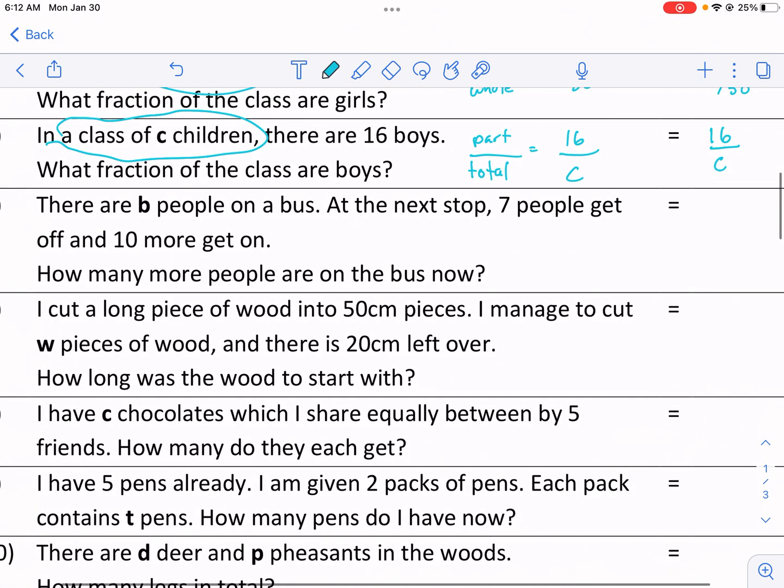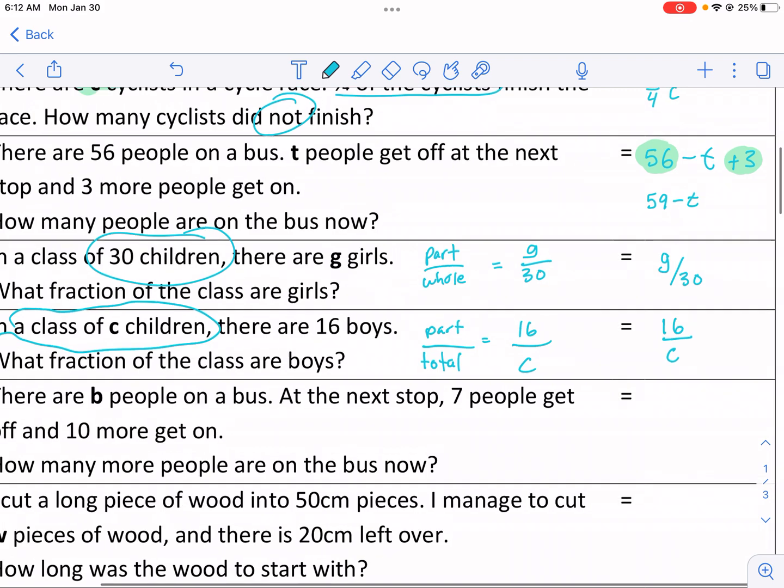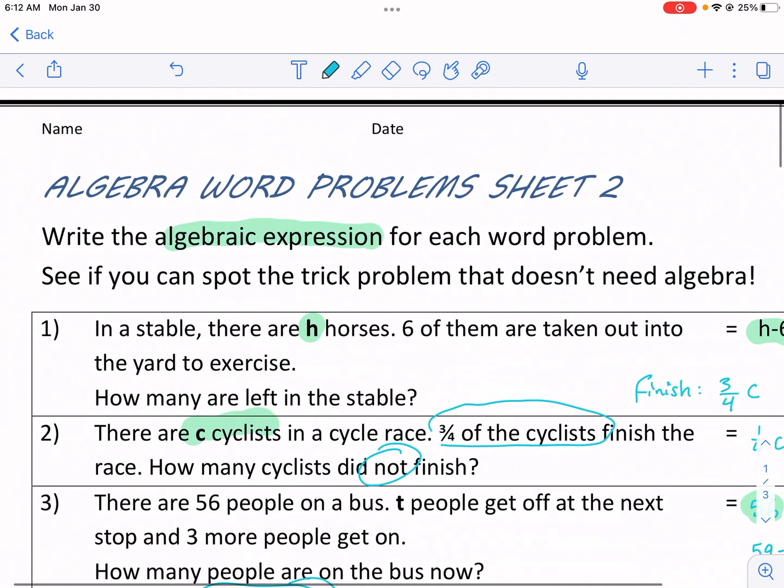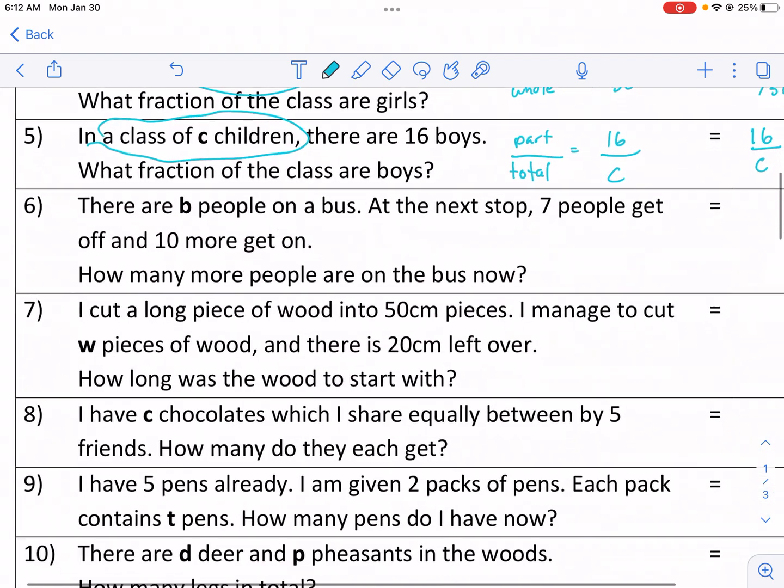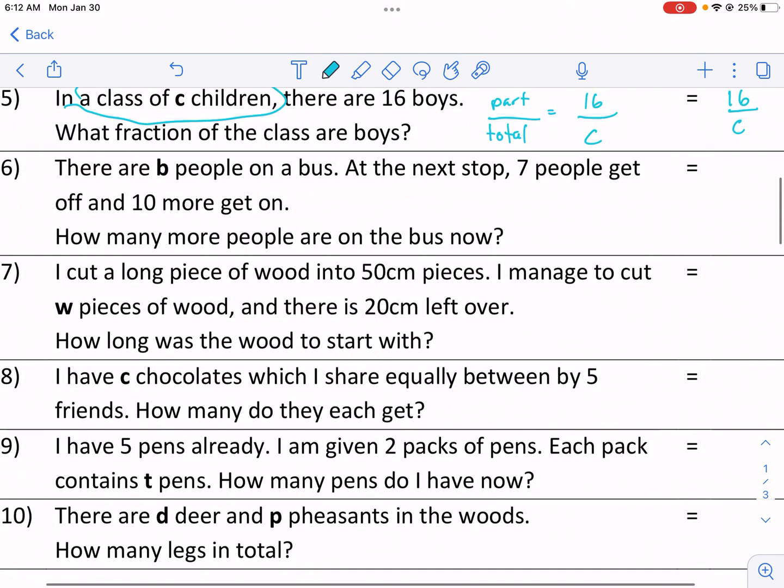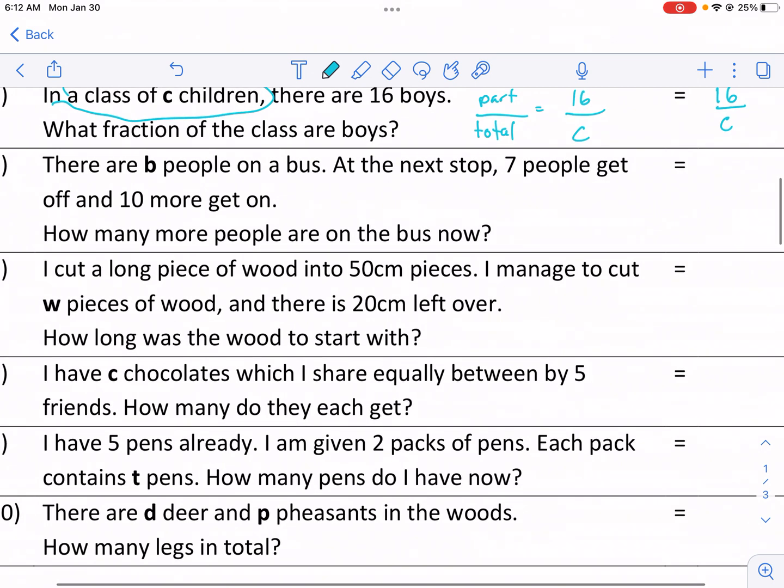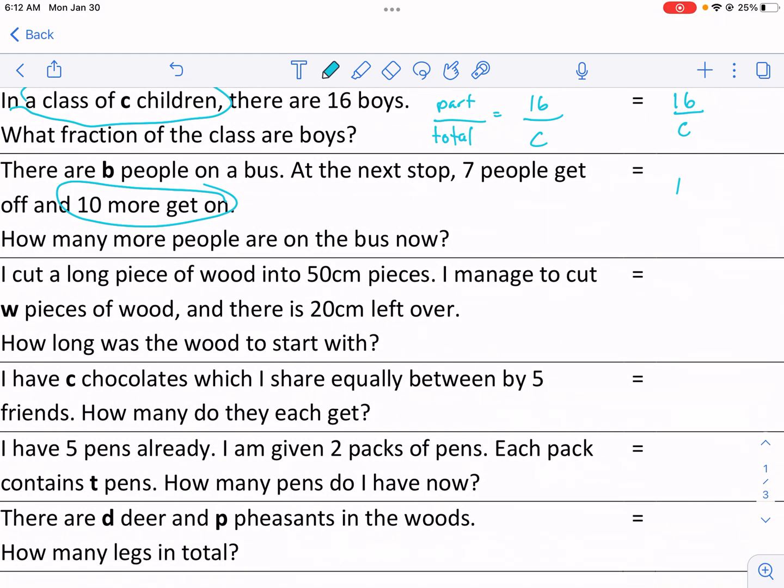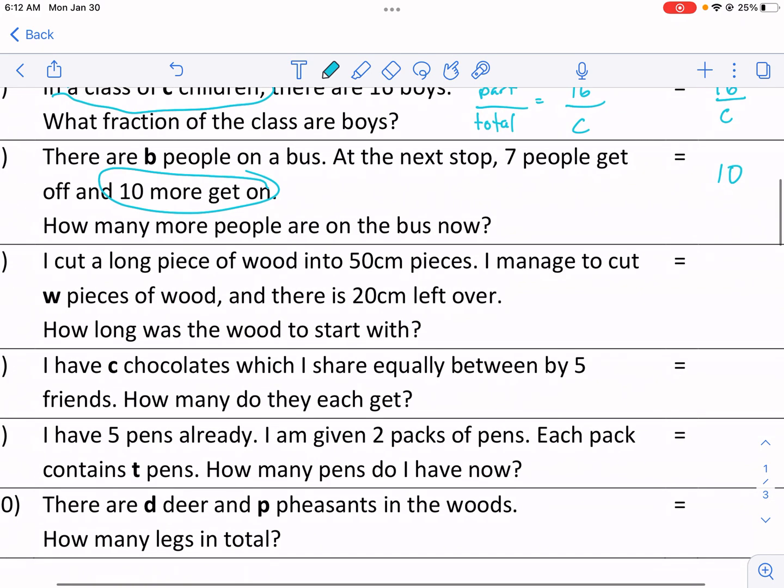There are B people on a bus at the next stop. Seven people get off and 10 more get on. How many more people are on the bus now? Take a look up here. See if you can spot the trick problem that doesn't need algebra. So the wording here is very particular. We have how many more people got on the bus now? How many more people got on? We said that 10 more got on. So this one's just 10. This is like the trick question. It's just making you read a little bit more carefully, which I think is a good thing.